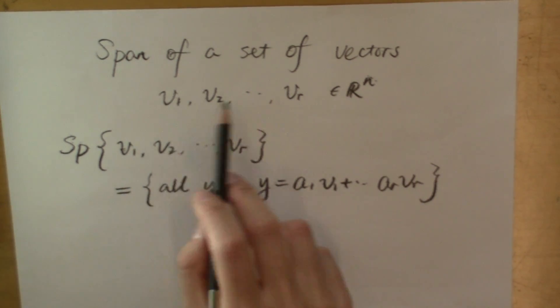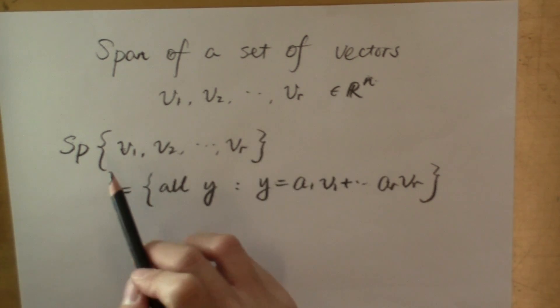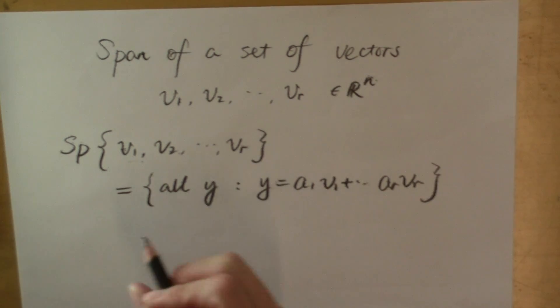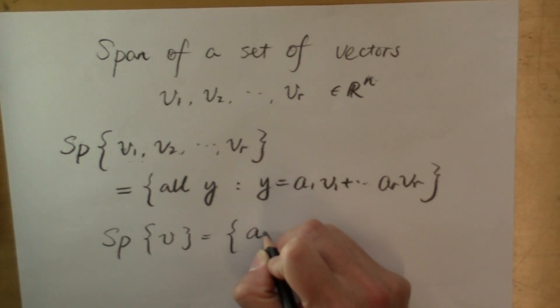For any set of vectors that are non-zero, the span of the set contains infinitely many vectors. For example, if you only have one vector, then the span of that vector is going to be all the vectors that are a constant multiplying this vector.